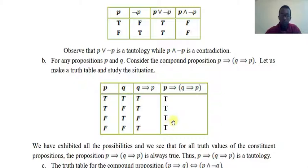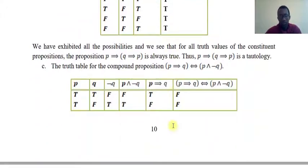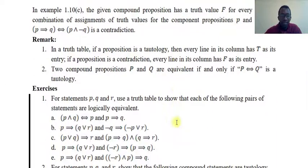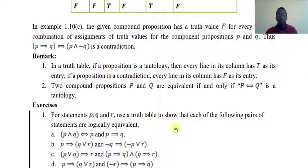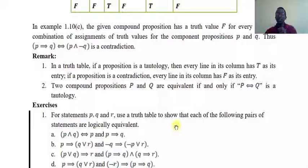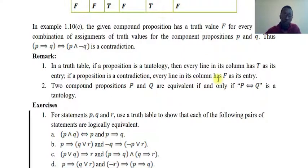In a truth table: if a proposition is a tautology, then every line in its column has T as its entry. If a proposition is a contradiction, then every line in its column has F as its entry.